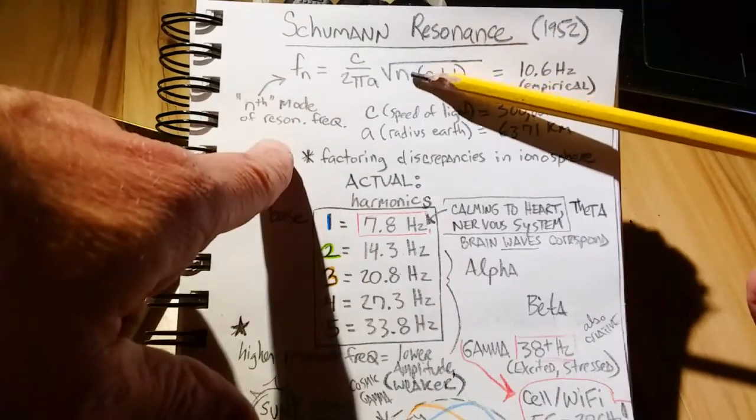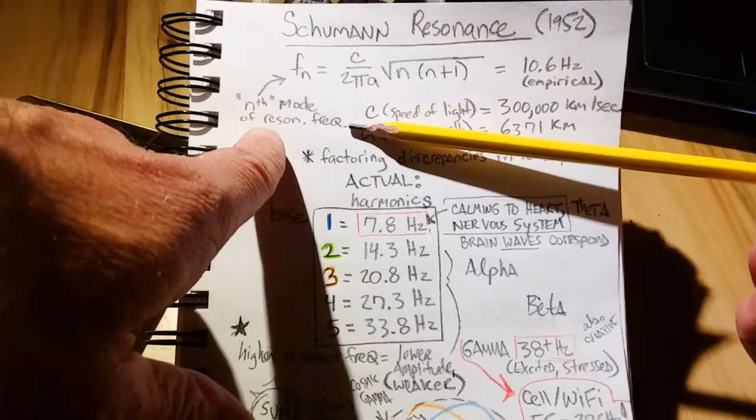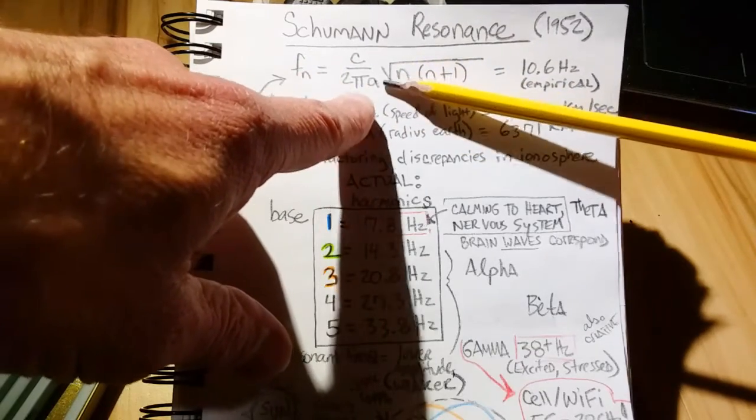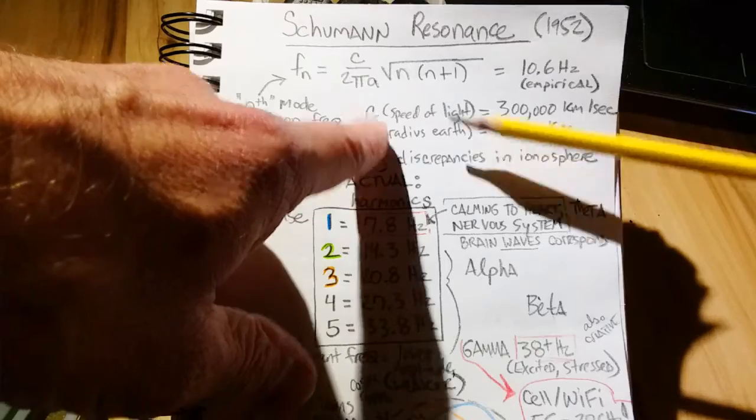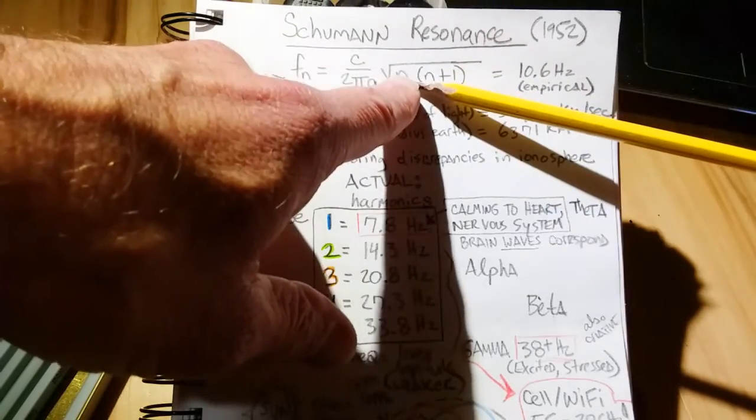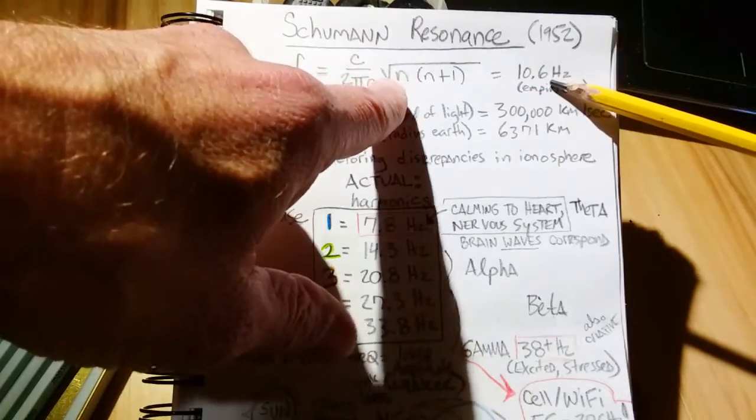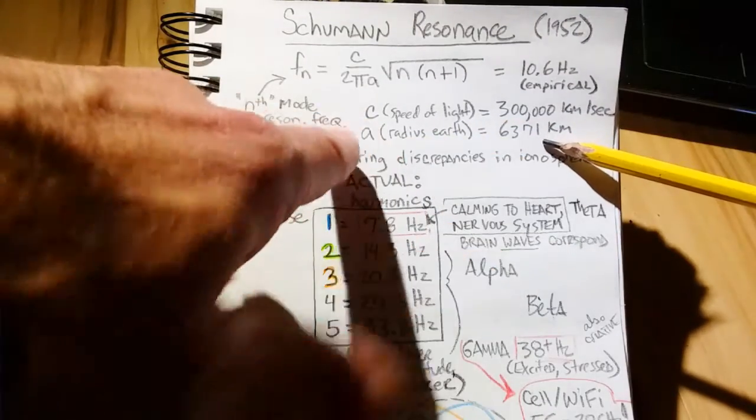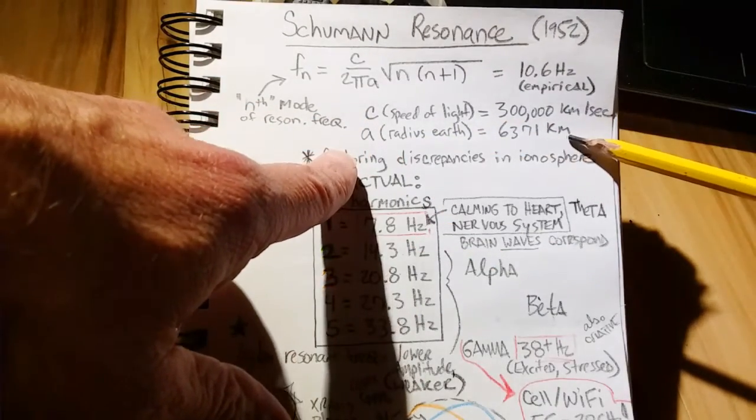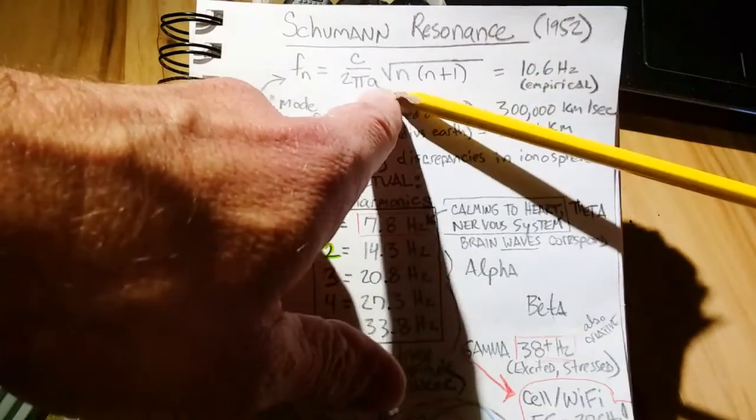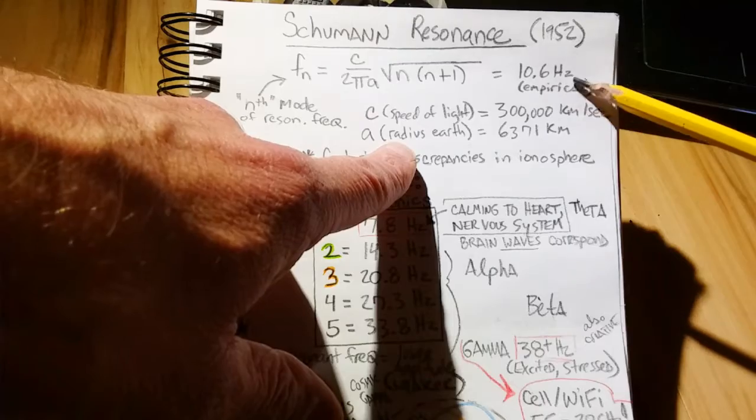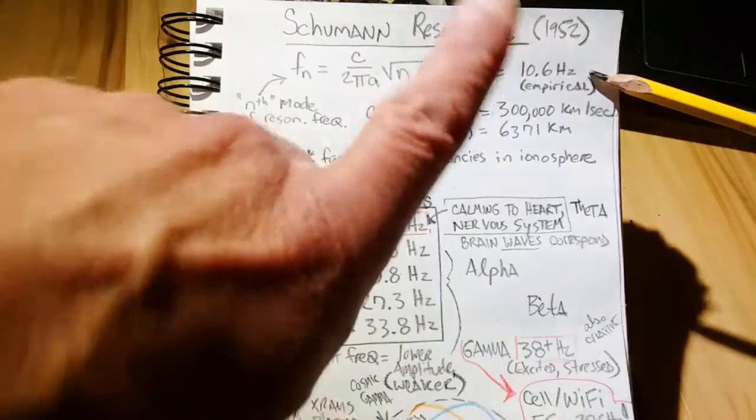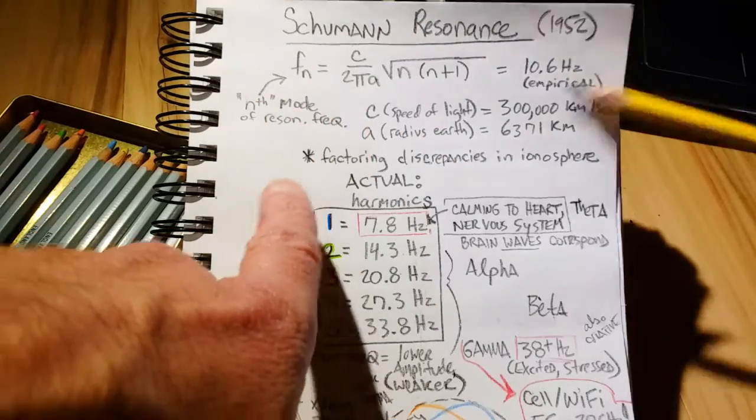The function is the n-th mode of the resonant frequency equals the speed of light divided by 2 times pi times the Earth's radius times the square root of the base times the base plus 1. The speed of light is 300,000 kilometers per second. The Earth's radius is about 6,371 kilometers. So empirically, if we just stick a 1 in for n, we arrive at 10.6 hertz as far as a base 1 resonant frequency for planet Earth.